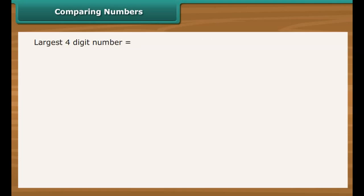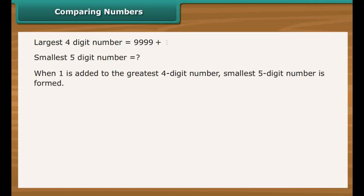The largest four-digit number is 9999. What should be added to this number to make smallest five-digit number? The answer is, we need to add 1. Let us find out. On adding 1 to 9999, we get 10,000, which is the smallest five-digit number.